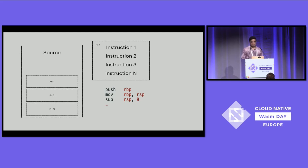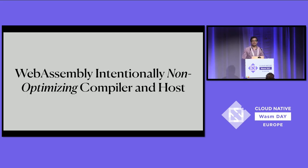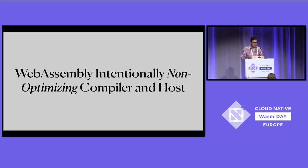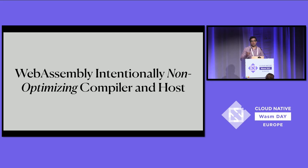I've talked about what a baseline compiler is, but I haven't said what Winch stands for. People who have worked with me on this project — mainly the CraneLift and WasmTime members — can agree that coming up with the name has been one of the most difficult things, more than the project itself. Winch stands for WebAssembly Intentionally Non-Optimizing Compiler and Host. The emphasis on non-optimizing is really important because the objective of Winch is totally the contrary of CraneLift — not being intelligent about the code it produces, but being intelligent about how that code is produced in a fast way.